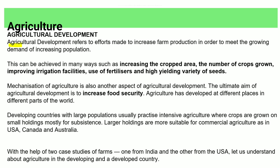Agricultural development aims to increase farm production to meet the growing demand for food for the rising population. Methods include increasing crop areas, growing more crops, and improving irrigation.